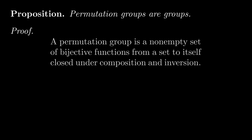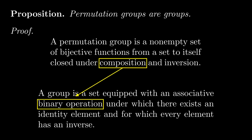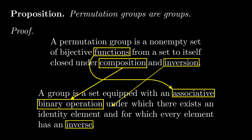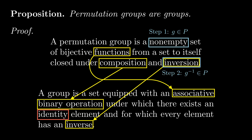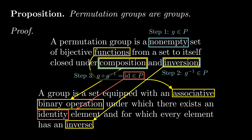Let's check that permutation groups are actually groups. Recall that a permutation group is a non-empty set of bijections from a set to itself, closed under composition and inversion. Being closed under composition ensures that composition is a binary operation. Associativity follows from the fact that function composition is associative. Existence of inverses follows from the fact that permutation groups are closed under inversion. All that's left to show is that permutation groups have an identity element. Since p is non-empty, we may fix an element g in p. Since p is closed under inversion, the inverse of g is in p, and since p is closed under composition, g times g-inverse is in p, but this is equal to the identity, and we're done.